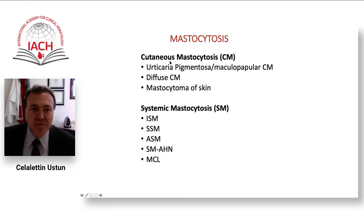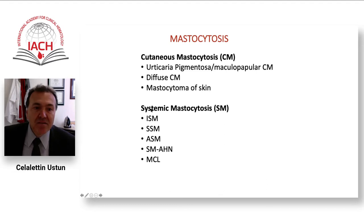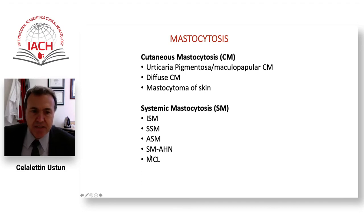Mastocytosis can be cutaneous mastocytosis — meaning the patients do not have systemic evidence, only skin involvement — with different forms. Systemic mastocytosis can also have skin involvement. SM is divided into indolent SM, smoldering SM, aggressive SM, SM associated with hematological neoplasm, and mast cell leukemia. The last three are also defined as advanced systemic mastocytosis.